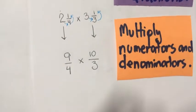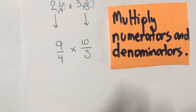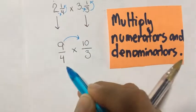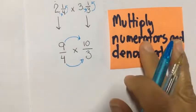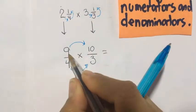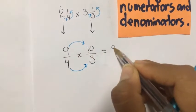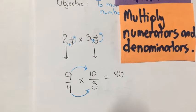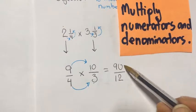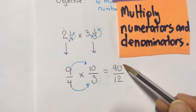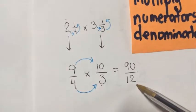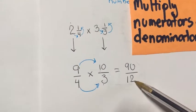Now we go to the second step: multiply numerators and denominators. Multiply the numerators first, then the denominators. 9 times 10 is 90. Now 4 times 3 is 12. Before simplifying, note that we have an improper fraction 90/12.